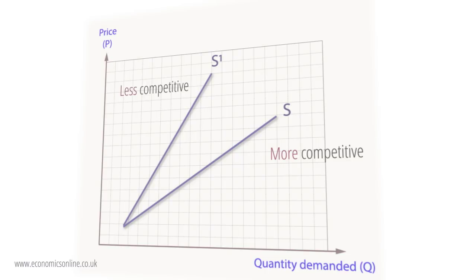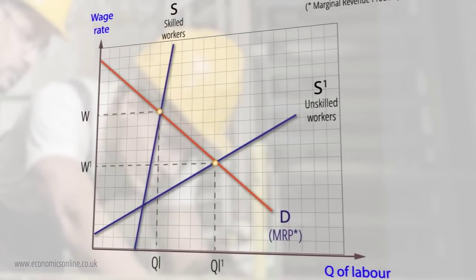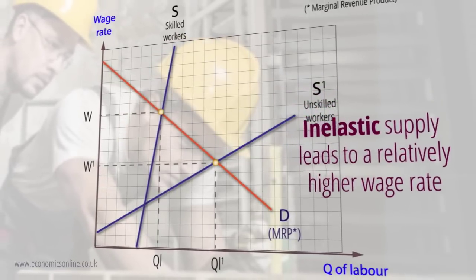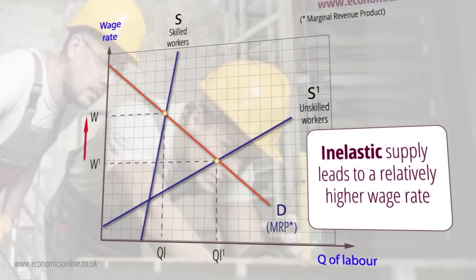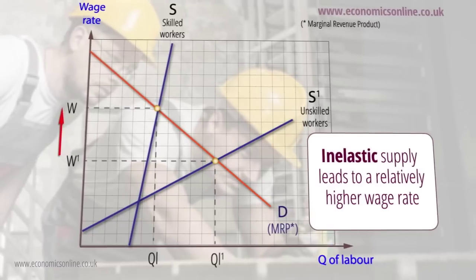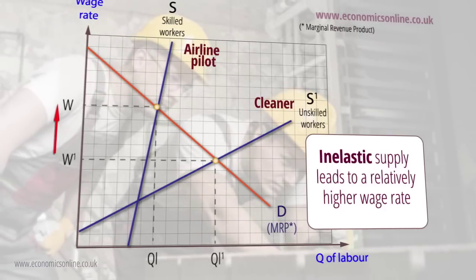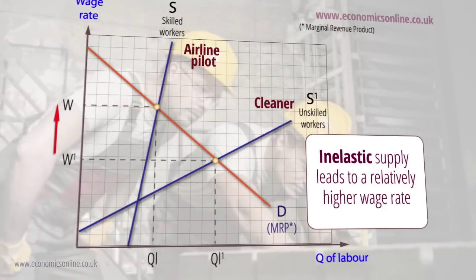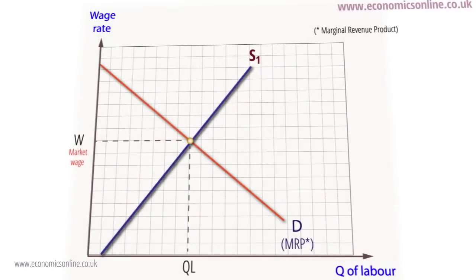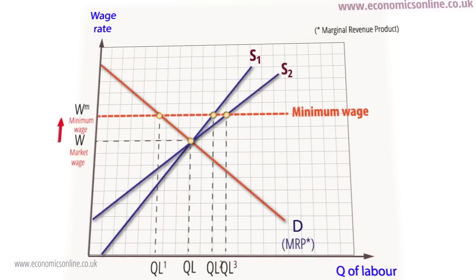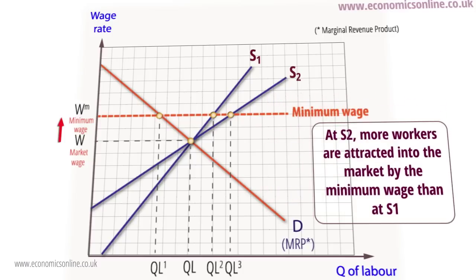In labour markets, differences in the elasticity of supply of labour affect the wage rate of different types of labour, as well as affecting the employability of labour. The more inelastic the supply of labour in a particular market segment, the greater the wage rate. For example, the lengthy training required to become a highly skilled worker, such as an airline pilot, will reduce the elasticity of supply and raise the wage rate to W, in comparison with a less skilled worker, such as a cleaner, who will only earn a wage rate of W1. The elasticity of supply of labour will also affect the impact of any minimum wage, with a more elastic supply causing a greater loss of jobs if the minimum is set well above the market wage rate.